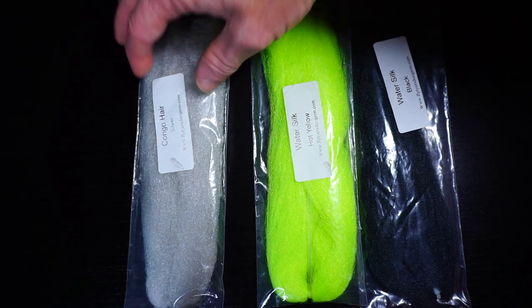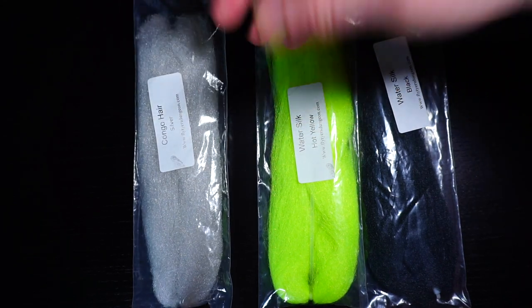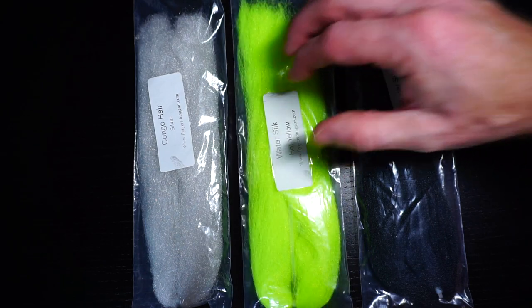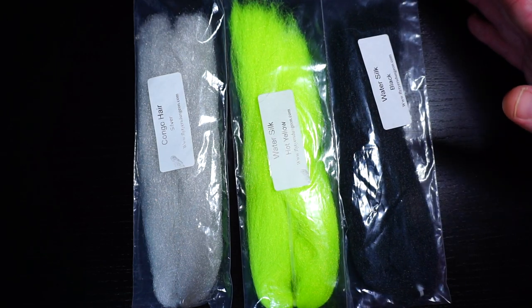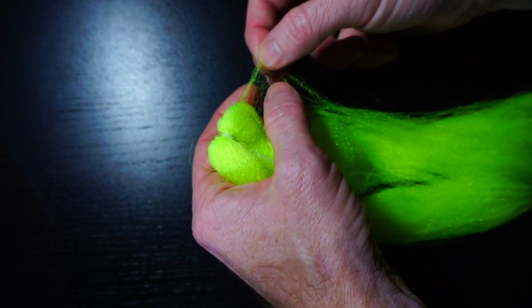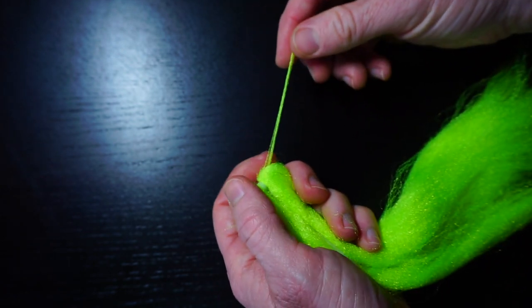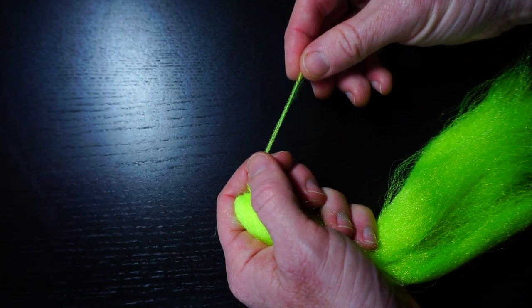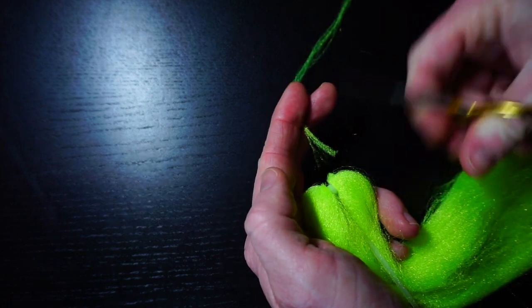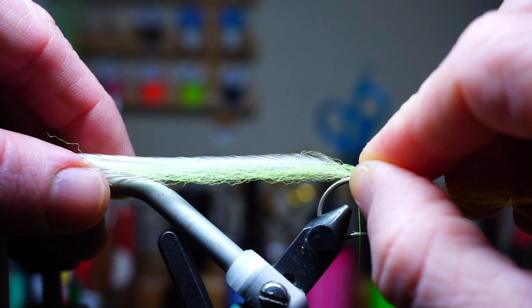Now for some synthetic fibers. I'm going to use a mixture of Congo hair and water silk. Congo hair is basically the same thing as standard EP fiber, and water silk is the finer version of Congo hair which can be substituted for EP silky fiber. But the finer material really helps with the top part of this fly. We will be selecting a very small amount of the chartreuse color first. In fact, all the colors will be using a very small amount of fiber.